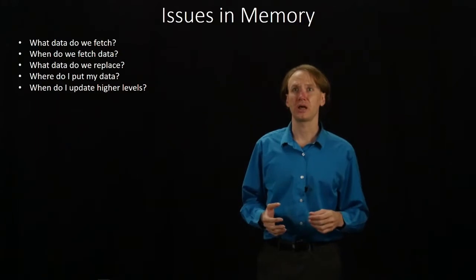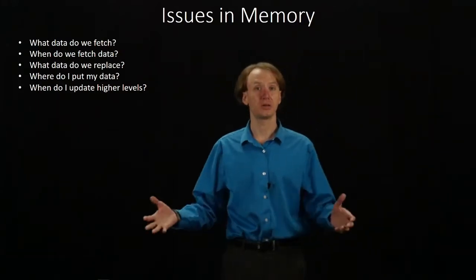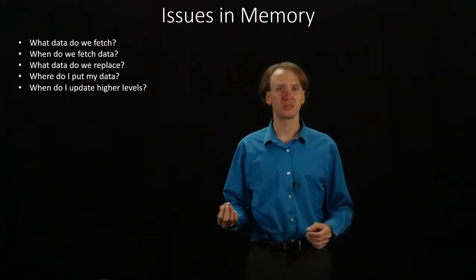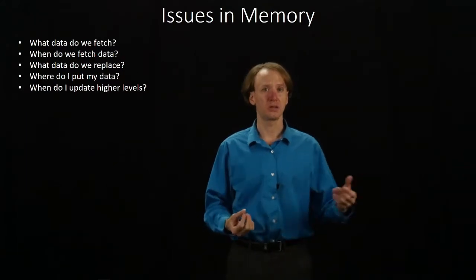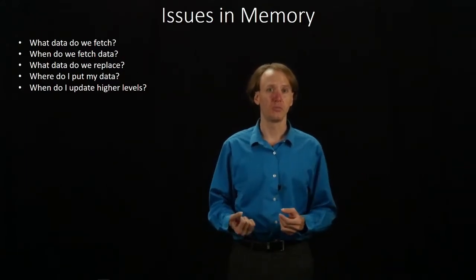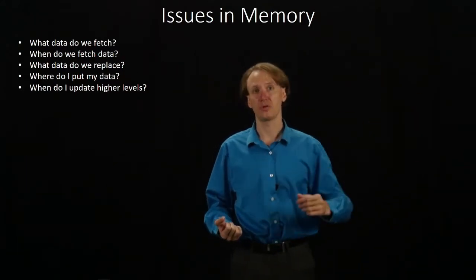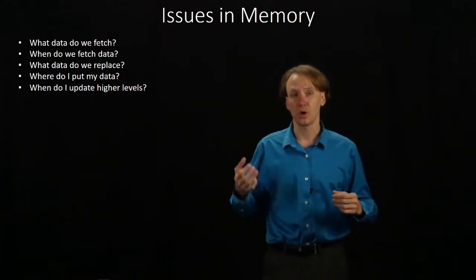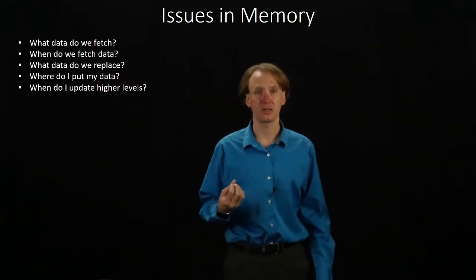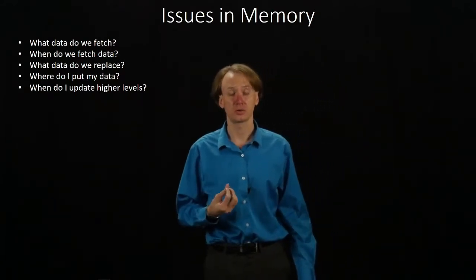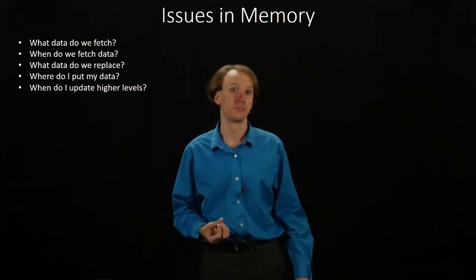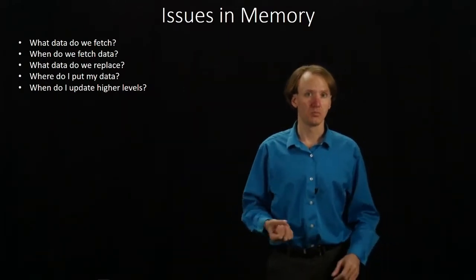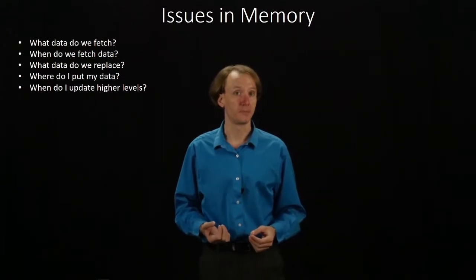So the first question we might have is: what data do we fetch? When I request a piece of data and it's not immediately available, I have to go to a different level of my hierarchy. Do I always just pull in the single byte that I want, or am I going to pull in something larger? If I do bring some other data with it, how do I decide what I should bring?